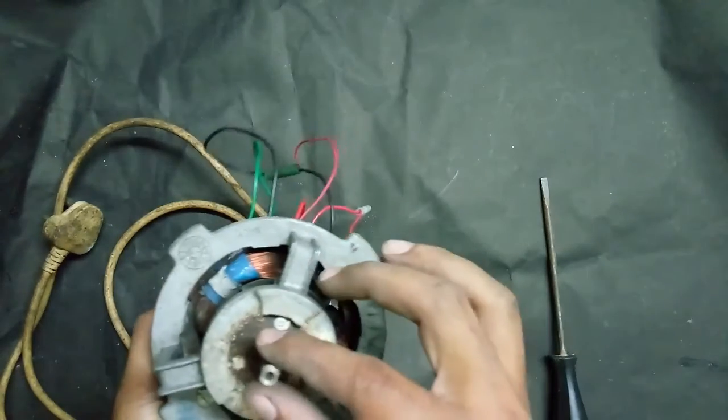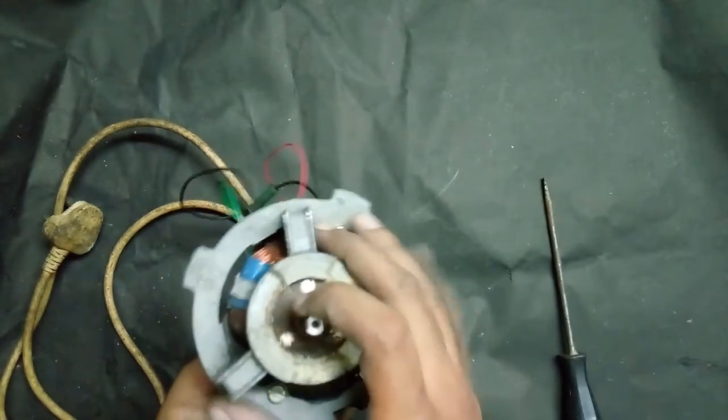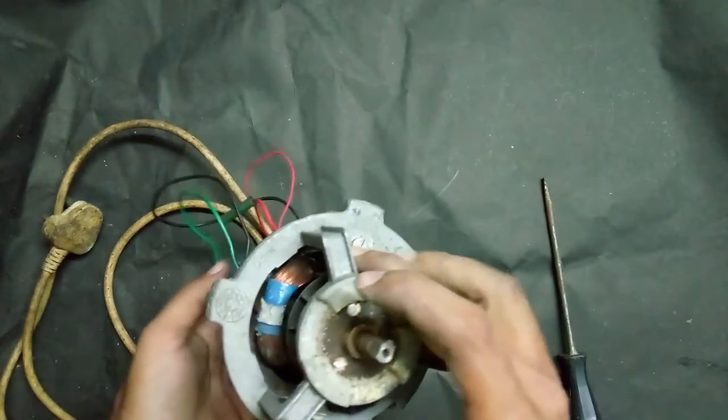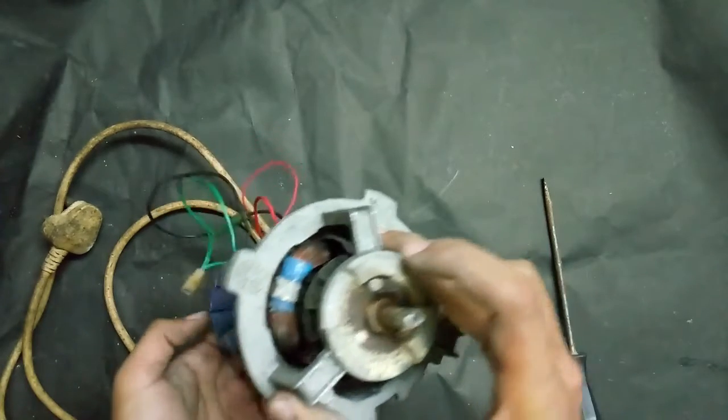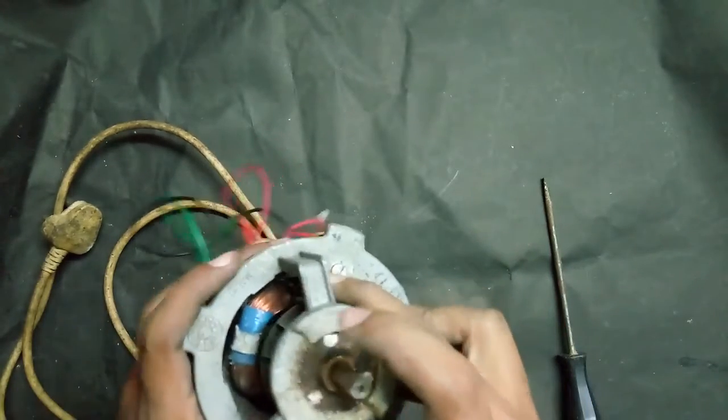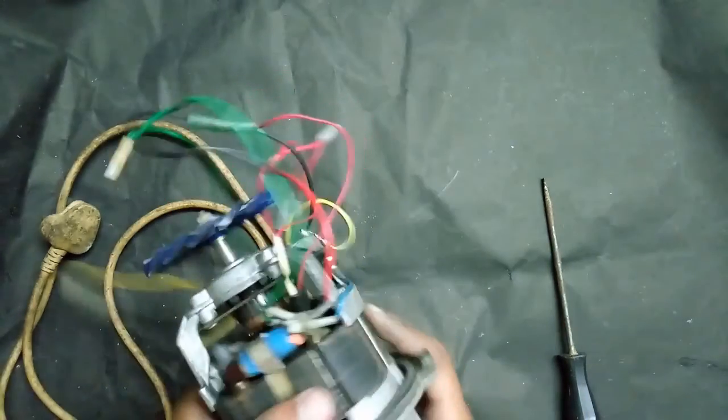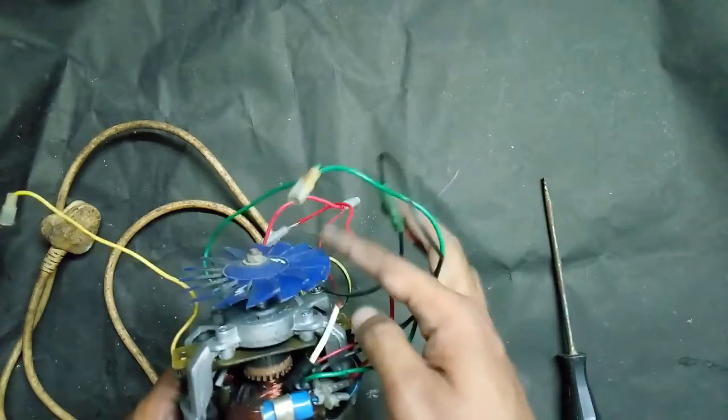And a fan is given at the end. It is for cooling purpose and also for maintaining the load. We need to maintain the posture, so the fan is given. And this is our internal part.